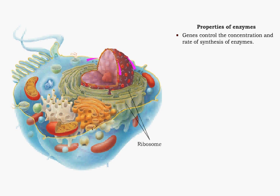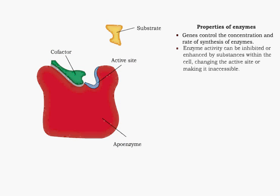The third important property of enzymes is that they can be controlled in several ways. In this case, activity can be affected by the genes, which determine the concentration and rate of synthesis of all proteins. Enzymes can be inhibited or enhanced by substances within the cell.